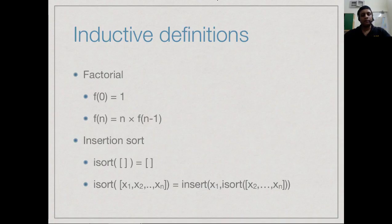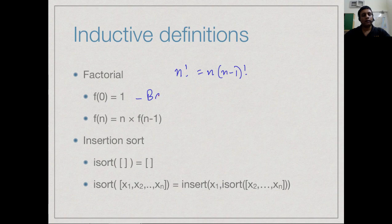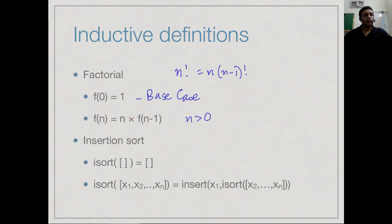There are many very simple functions which we come across which are inductive. We all know that mathematically n factorial is n times n minus 1 factorial. The base case is when n is 0 and in this case the factorial is 1. So f(0) = 1, and in general if n > 0 then f(n) = n times f(n-1). In other words, we express the factorial of n in terms of the same function applied to a smaller input.